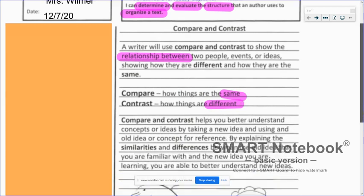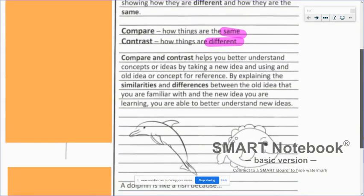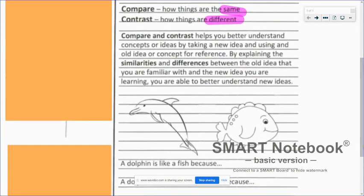And if we keep moving down here, it says compare and contrast helps you better understand concepts or ideas by taking a new idea and using an old idea or concept for reference. By explaining the similarities and differences between the old idea that you are familiar with and the new idea you are learning, you are able to better understand new ideas.